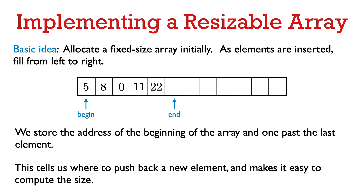We can maintain a pointer called begin to the start of the fixed size array, and a pointer called end to one past the last element stored in the array. This end pointer is pointing to the location where we should push back the next element. From begin and end, we can determine the size — the number of elements in the array. This is how a resizable array works in its normal mode of operation when we have excess capacity.